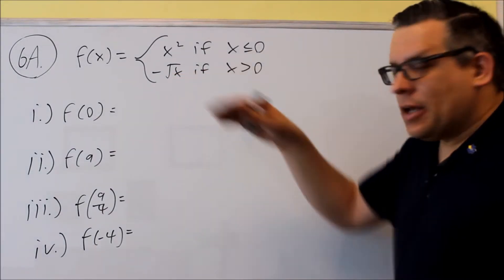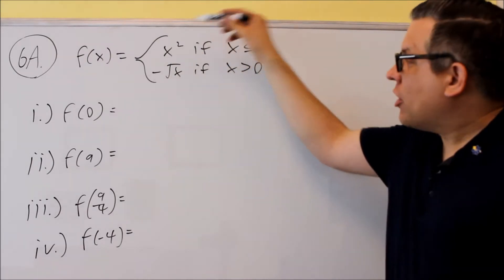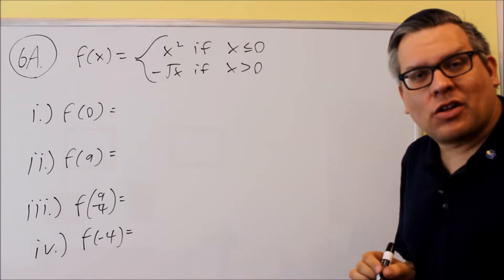For number six, it's going to be a piecewise function. Piecewise means that you have two functions and you have some conditional statements on the end.